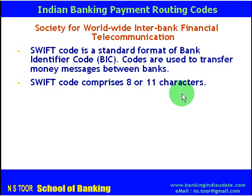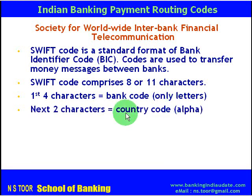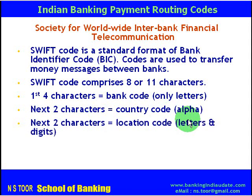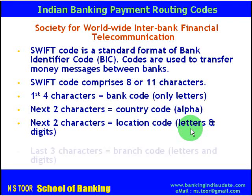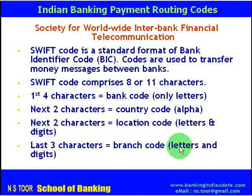Let us see the breakup of these 11 characters. The first four characters represent the bank code — these are only letters. The next two characters represent the country code — these are alphabetic. The next two characters represent the location code, in the form of letters and digits. And lastly, the last three characters represent the branch code in letters and integers. That is how the SWIFT code comprises 11 characters.